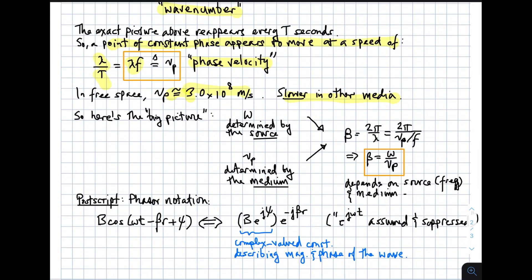So here's the big picture. We have omega, which is usually determined by the source. We have something attached to an antenna, and it's creating a sinusoidally varying waveform applied to the antenna, and that's the thing that sets omega. And then we have phase velocity, which seems to be determined by two things, both omega and the medium. So beta is 2 pi over lambda. That's 2 pi over phase velocity divided by frequency, or you can shortcut this by saying that beta equals omega over phase velocity, and that's the relationship between those three things. This depends on the source, that's the frequency, and the medium.